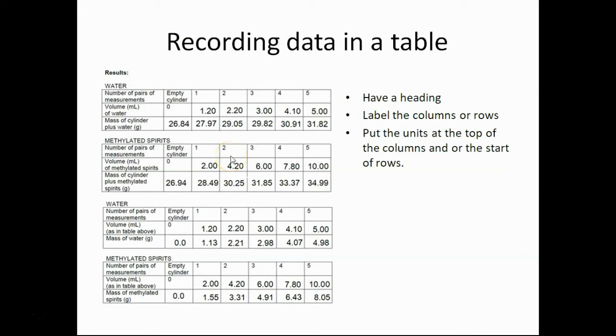Our recording of the data in the table. There are some things to note. First of all, we should have a heading. So here for example, we've got this clearly indicating that it's water that we're dealing with. We should have a label for the columns or the rows. So here we've got things in rows. So this is our heading. The volume of water, for example. The mass of cylinder. And we have the units. So the units go in here at the heading. And we do not put the units along here in each of these cells.